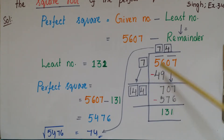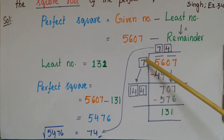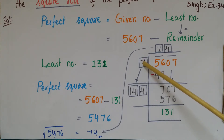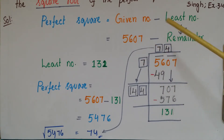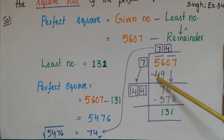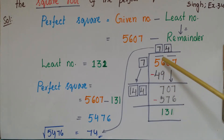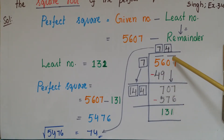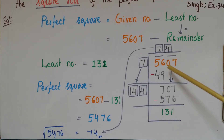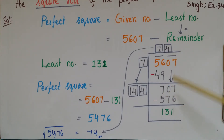Write 7 in the divisor place and 7 in the quotient place. The next step is to subtract 49 from 56, which gives 7. Then bring down the next bar digits 07, so the new number is 707.